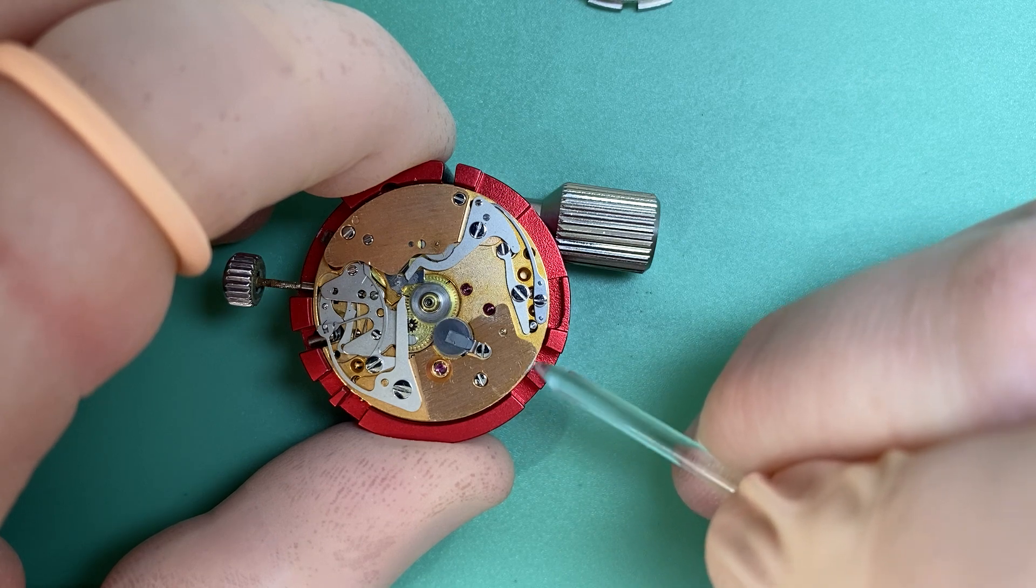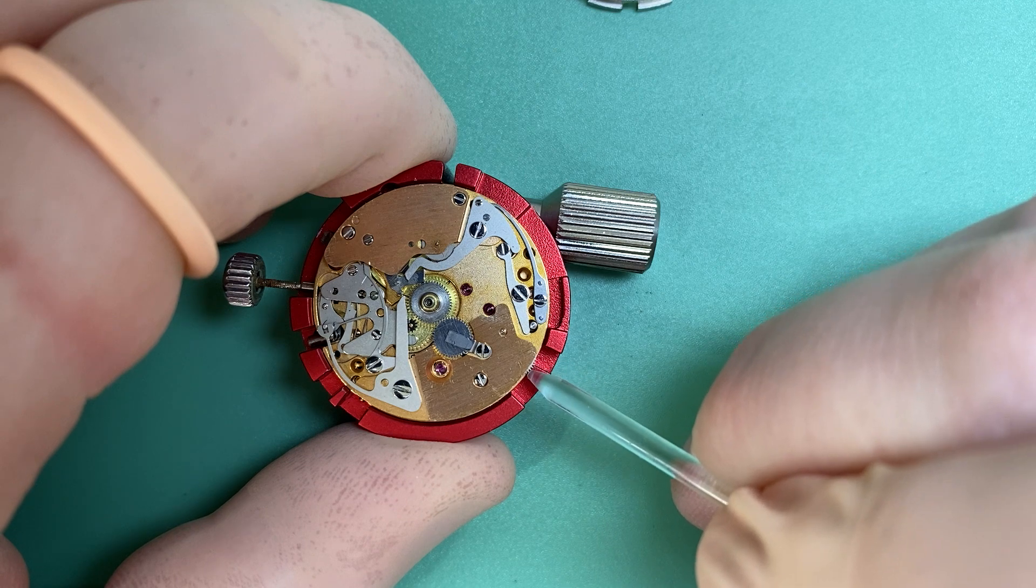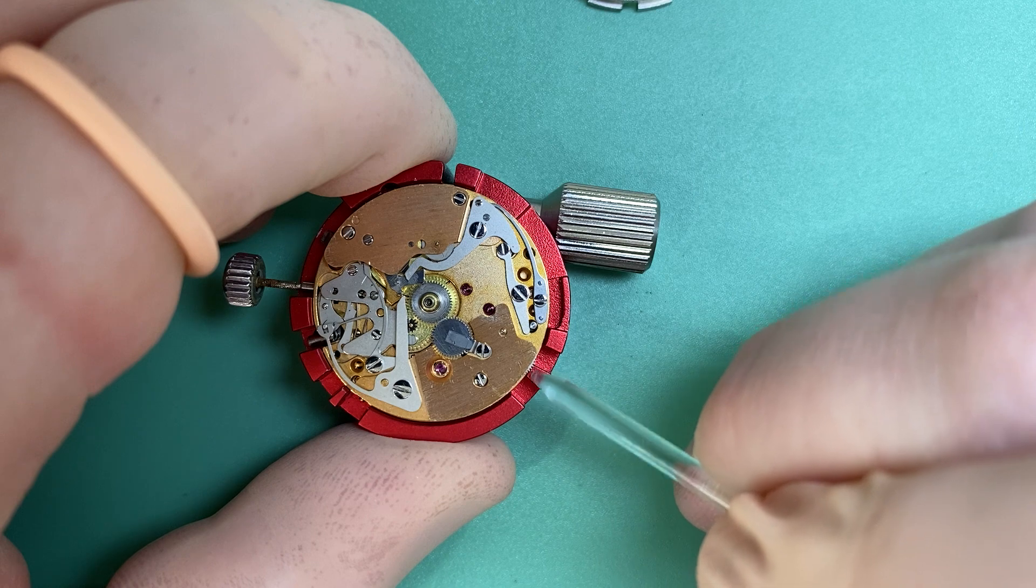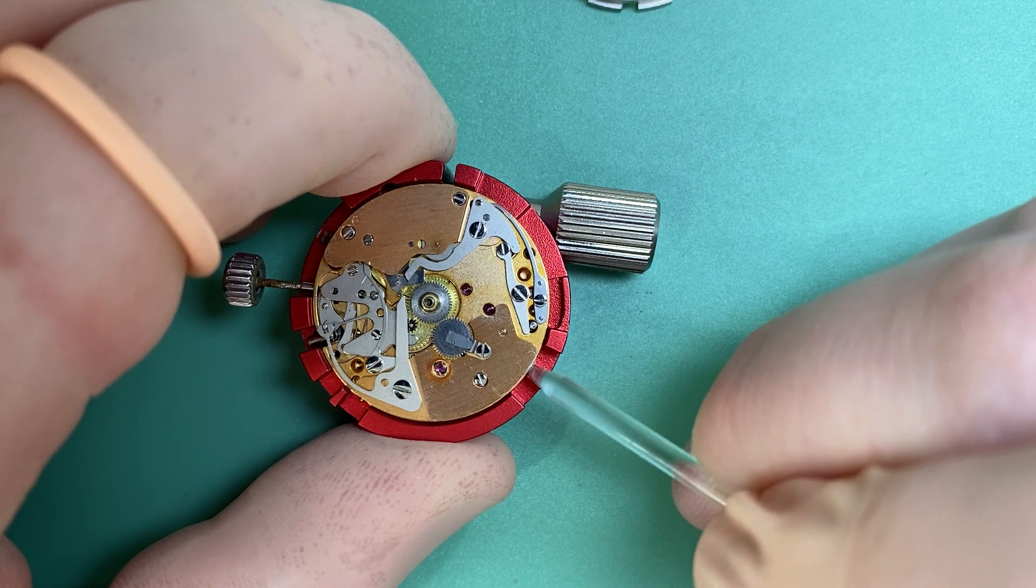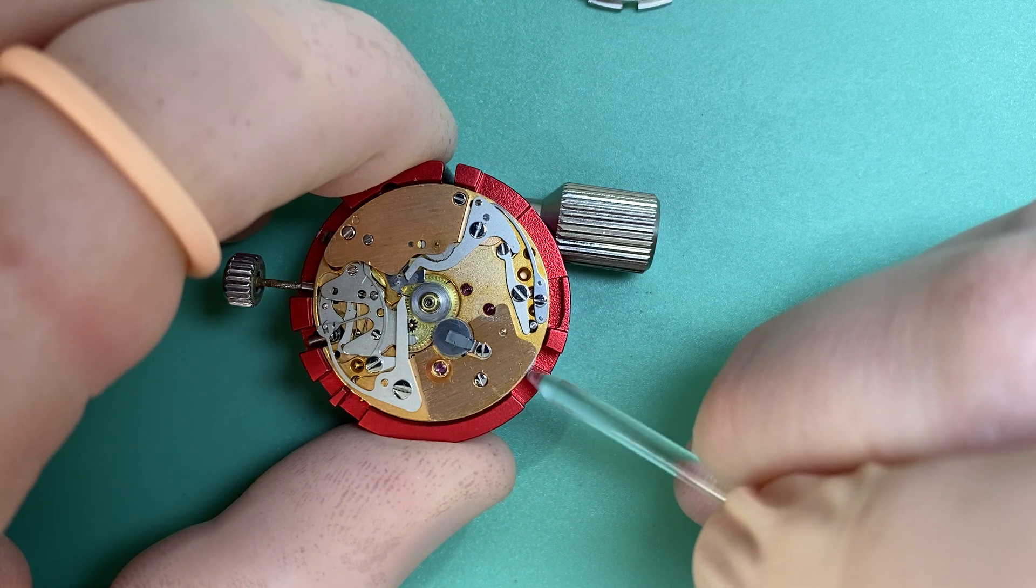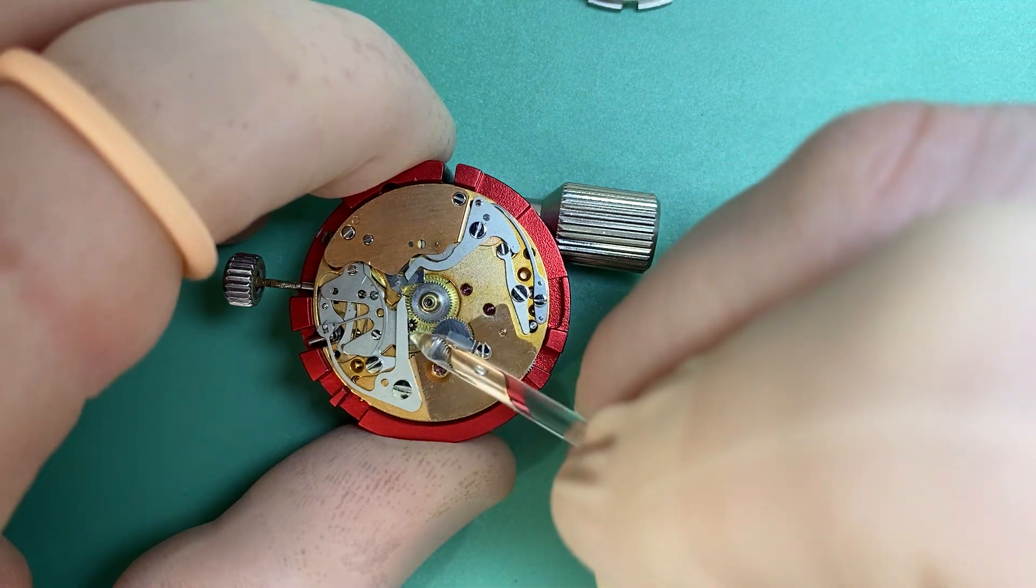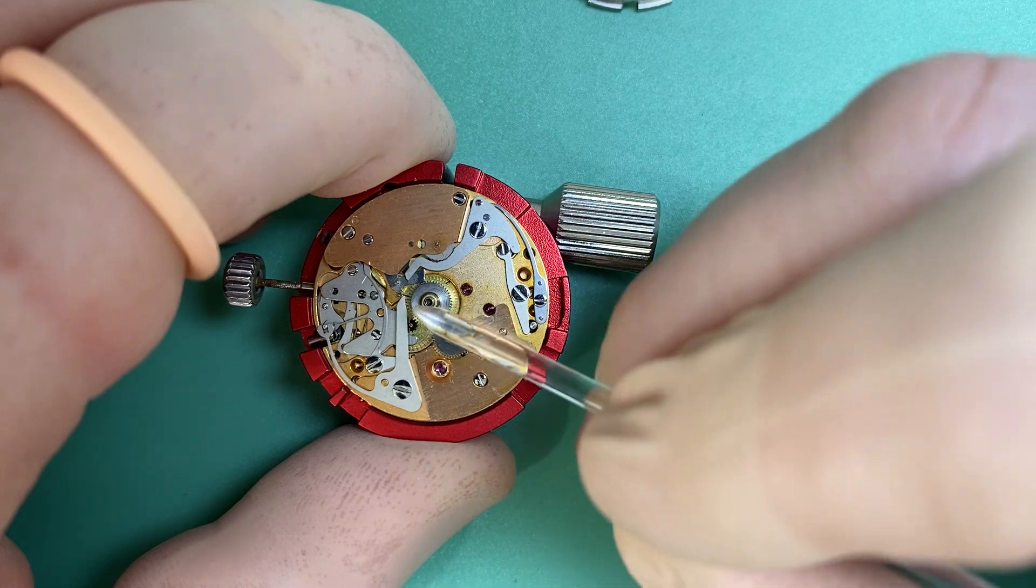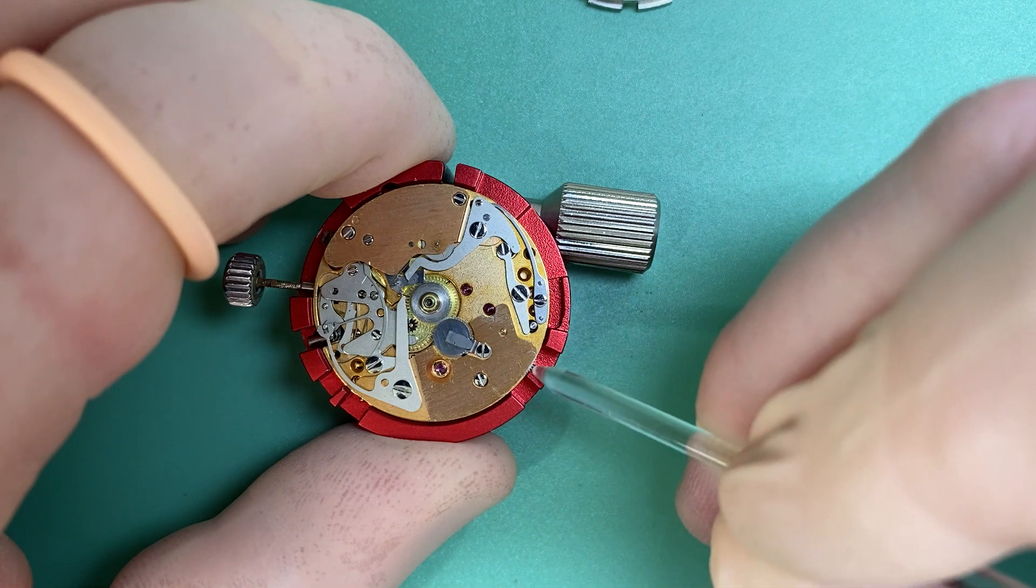So if we go ahead and we manually turn that wheel, what do we see? Well, we see our second time zone, we can only move it one way. Our second time zone now moves. We can only move it clockwise. When we go anti-clockwise, it doesn't work. Now, we notice that our regular hour wheel and minute wheel don't turn. So we're only setting our second time zone wheel.